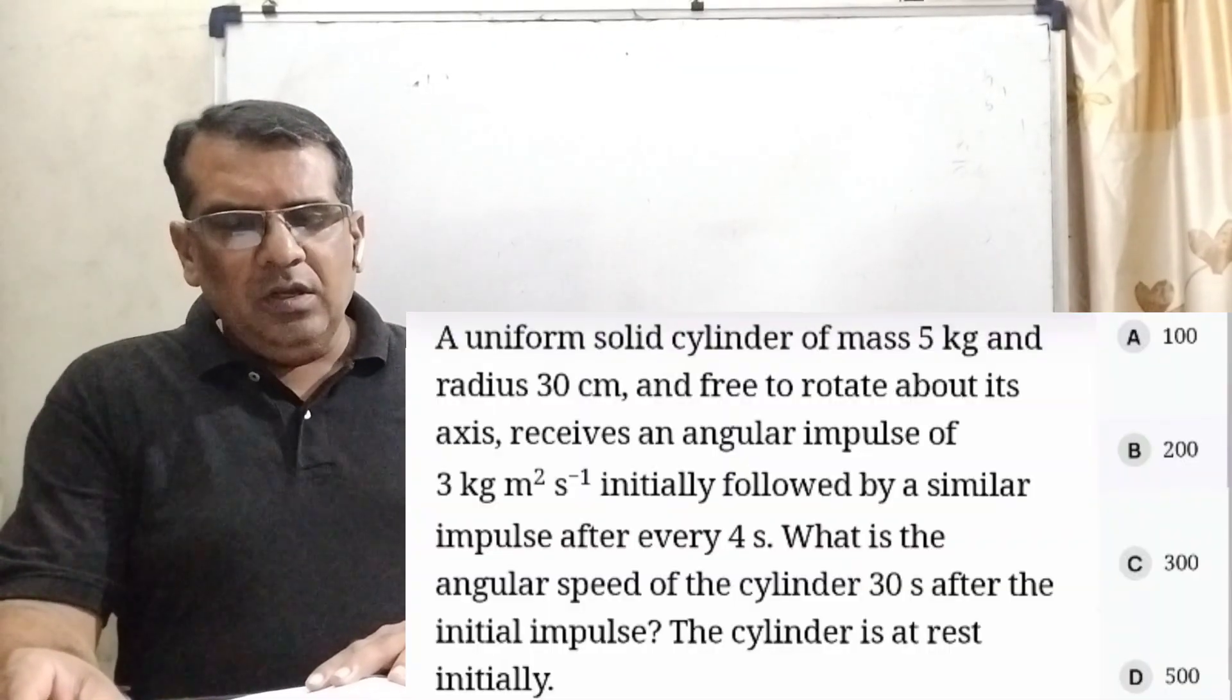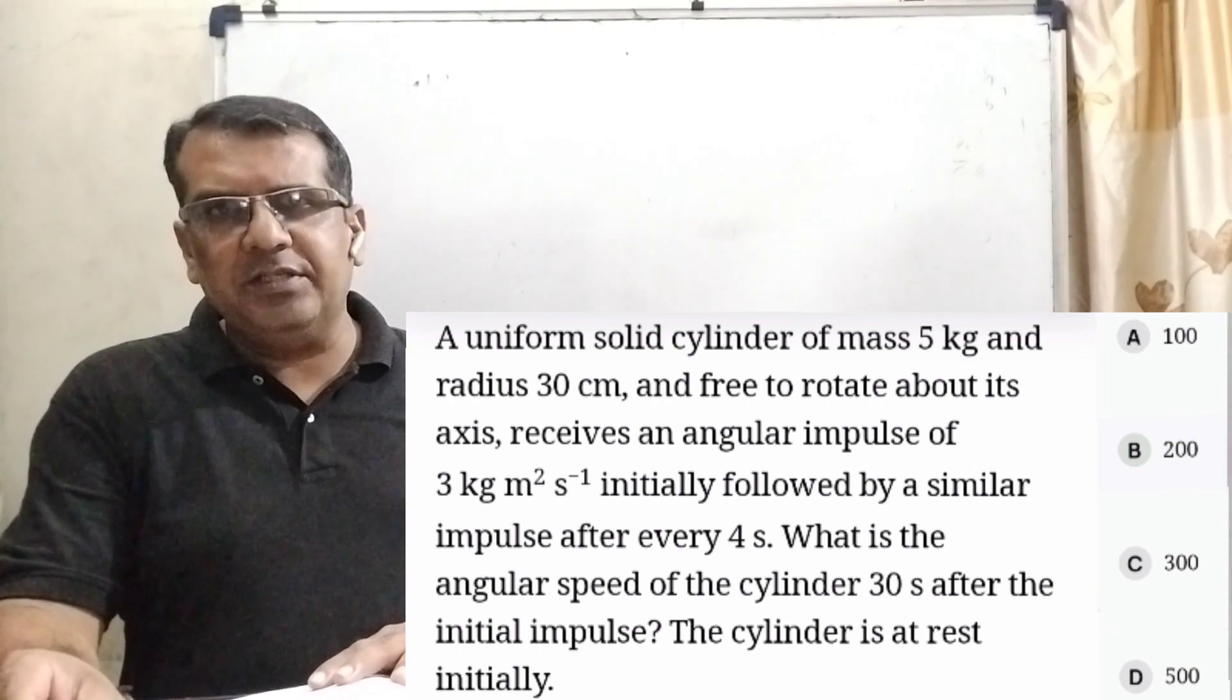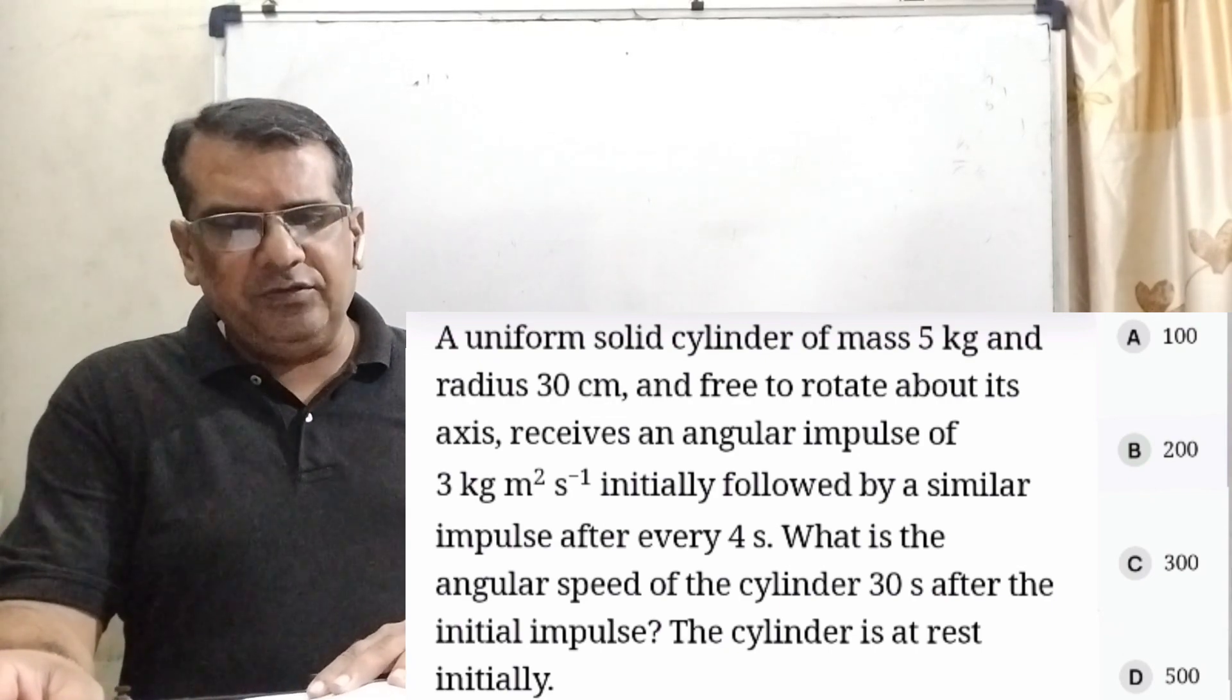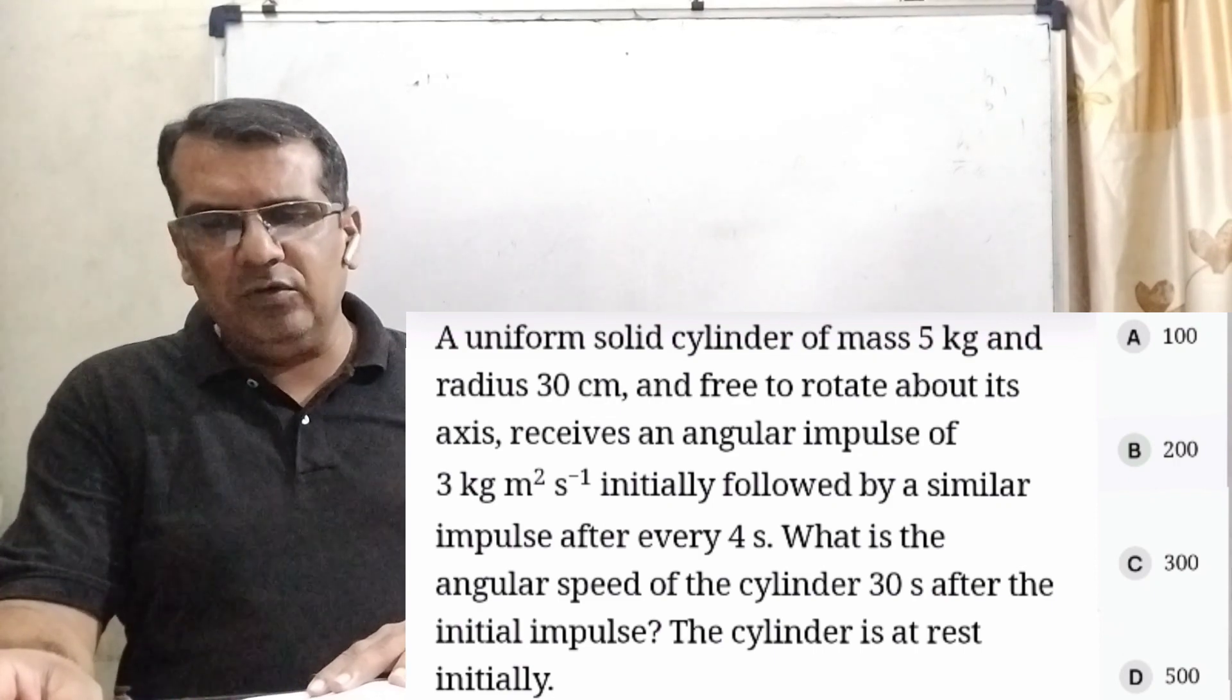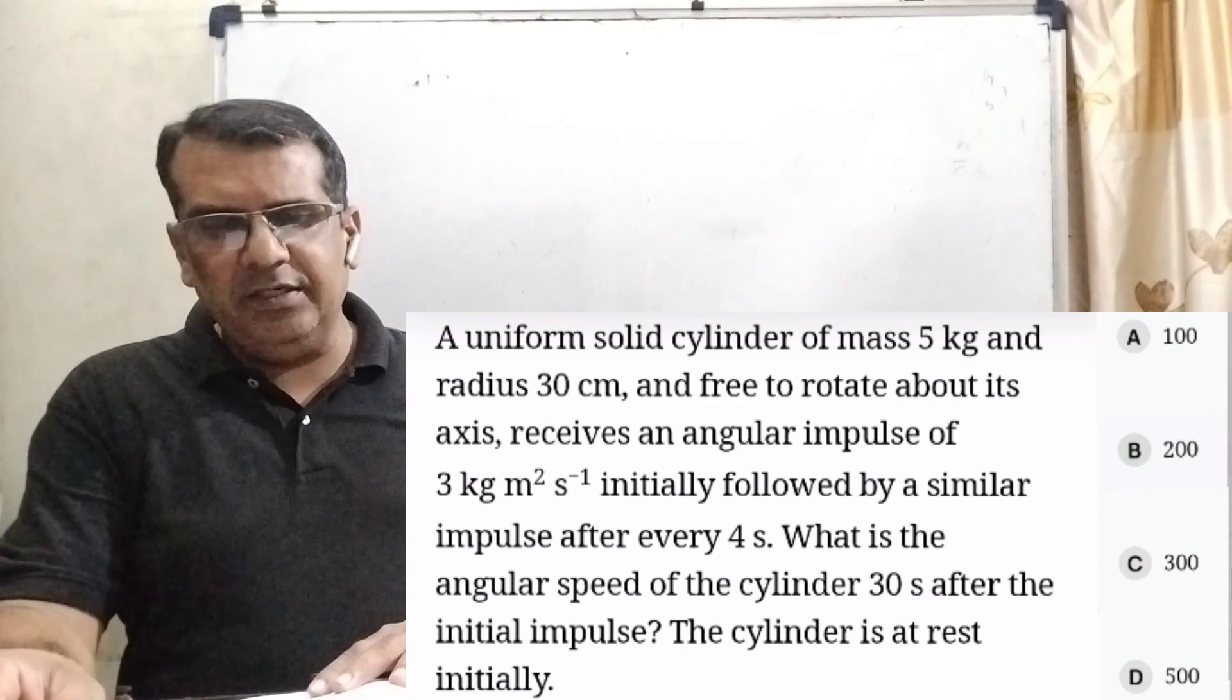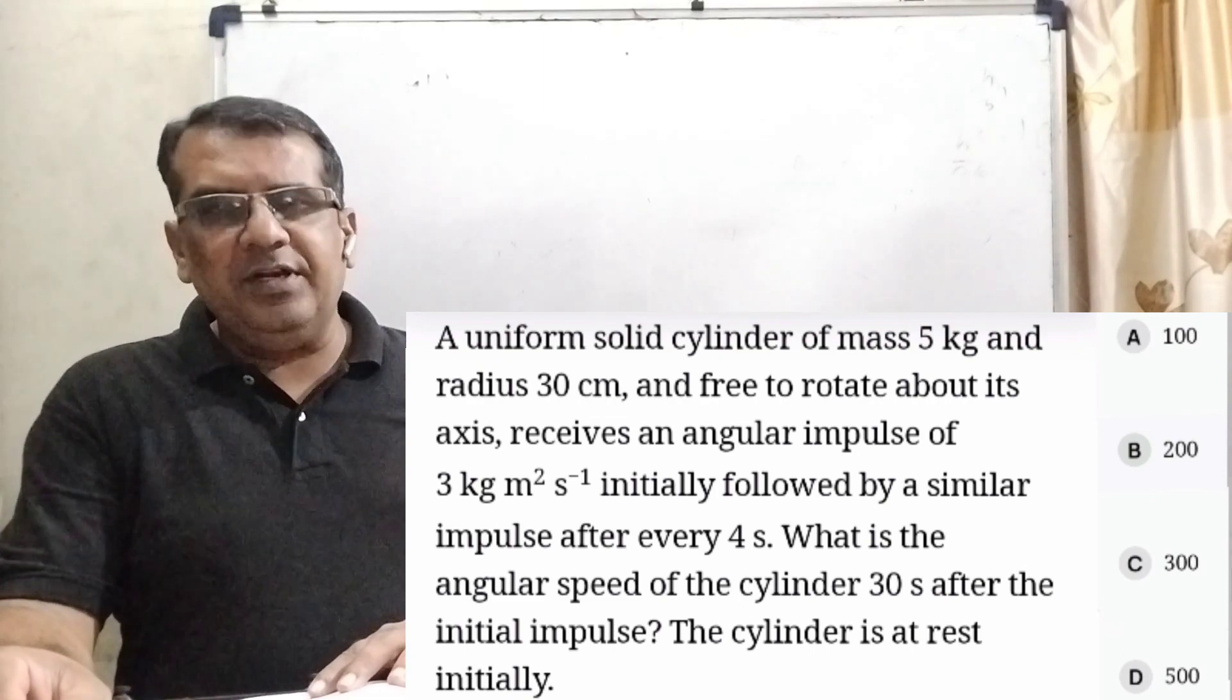Now here is the question. A cylinder of mass 5 kilograms and radius 30 centimeters is free to rotate about its axis. It receives an angular impulse of 3 kilogram meter squared per second initially, followed by a smaller impulse after every 4 seconds. What is the angular speed of the cylinder after 30 seconds of the initial impulse? The cylinder was at rest initially.